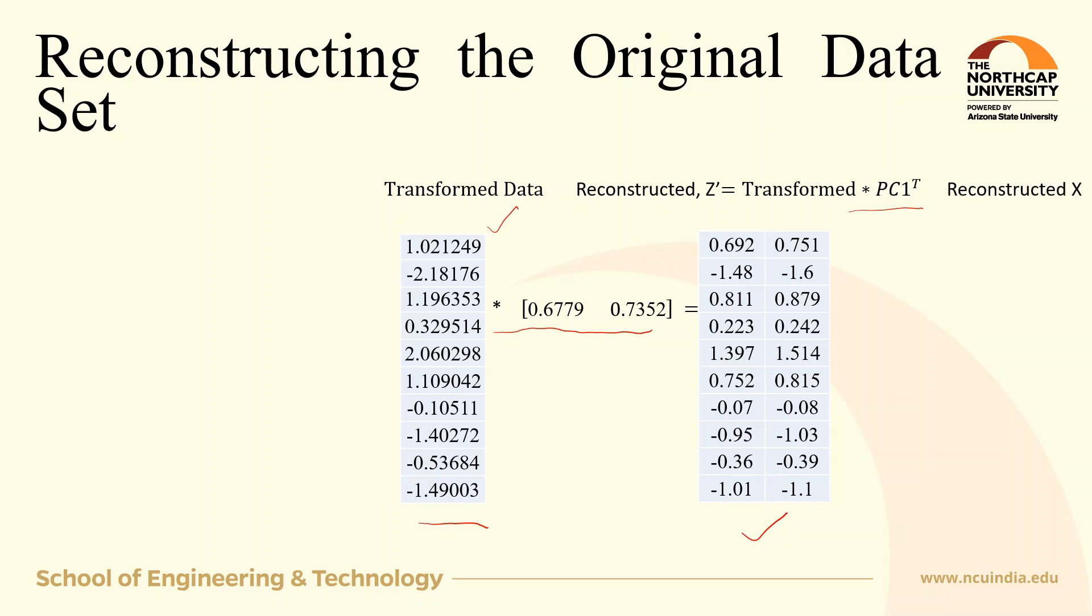Now, to get the reconstructed X, we multiply each element of the first column by the standard deviation 0.785, and for the second column, we multiply by the standard deviation 0.846.